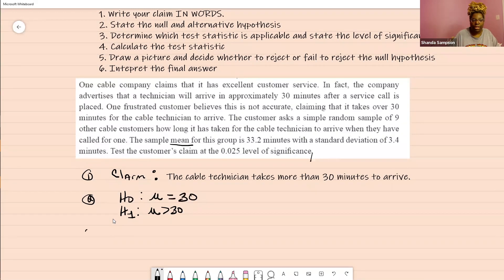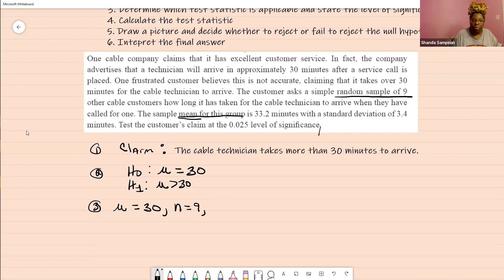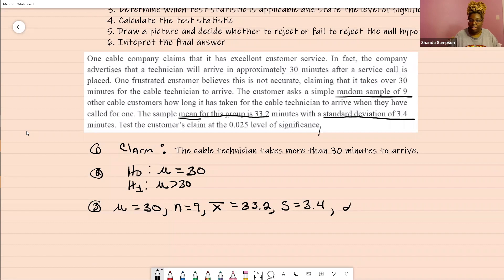The next thing you're going to do is find the test statistic. Let's go through and write down everything that we have. N equals 9, the sample mean is 33.2, sample standard deviation S equals 3.4, alpha is 0.025.